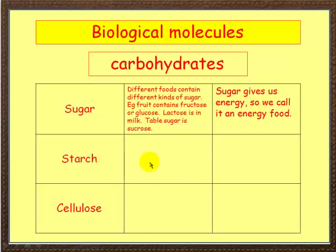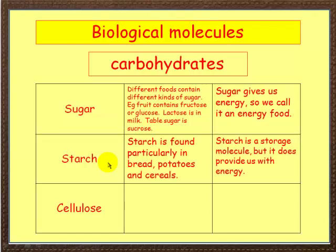Another form in which we take in carbohydrates is starch. Starch is found in foods such as bread, potatoes, cereals, pasta, rice and so on. Basically it is a storage molecule. We don't store it as starch - we'll come on to this in a later video - but we do store it and it provides us with energy.